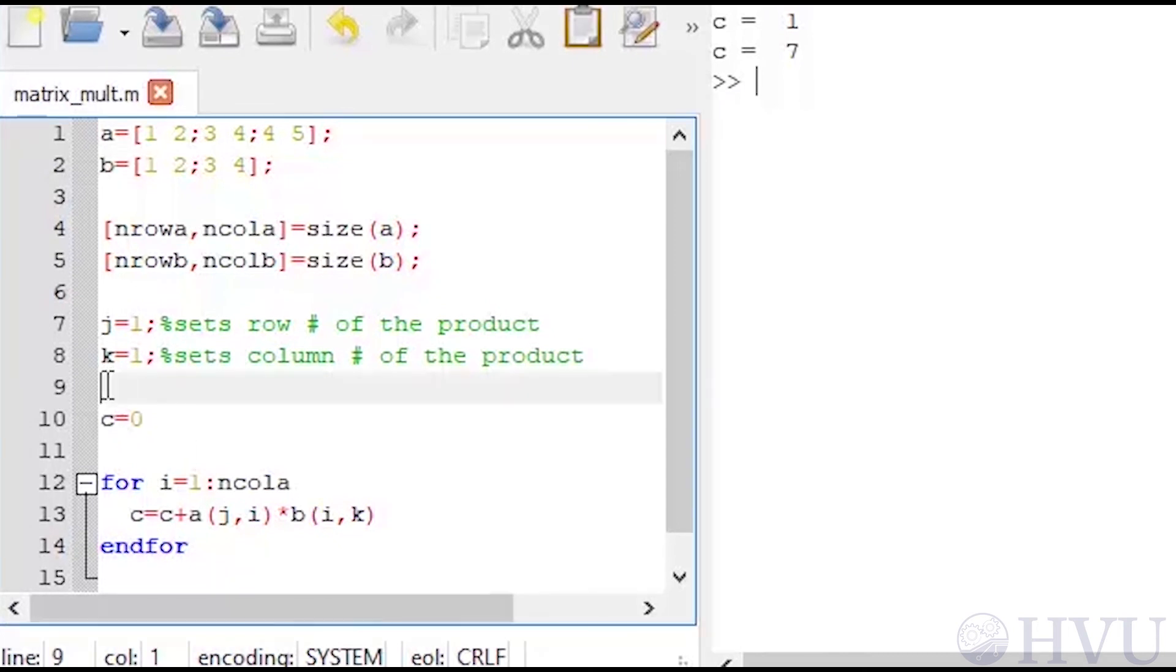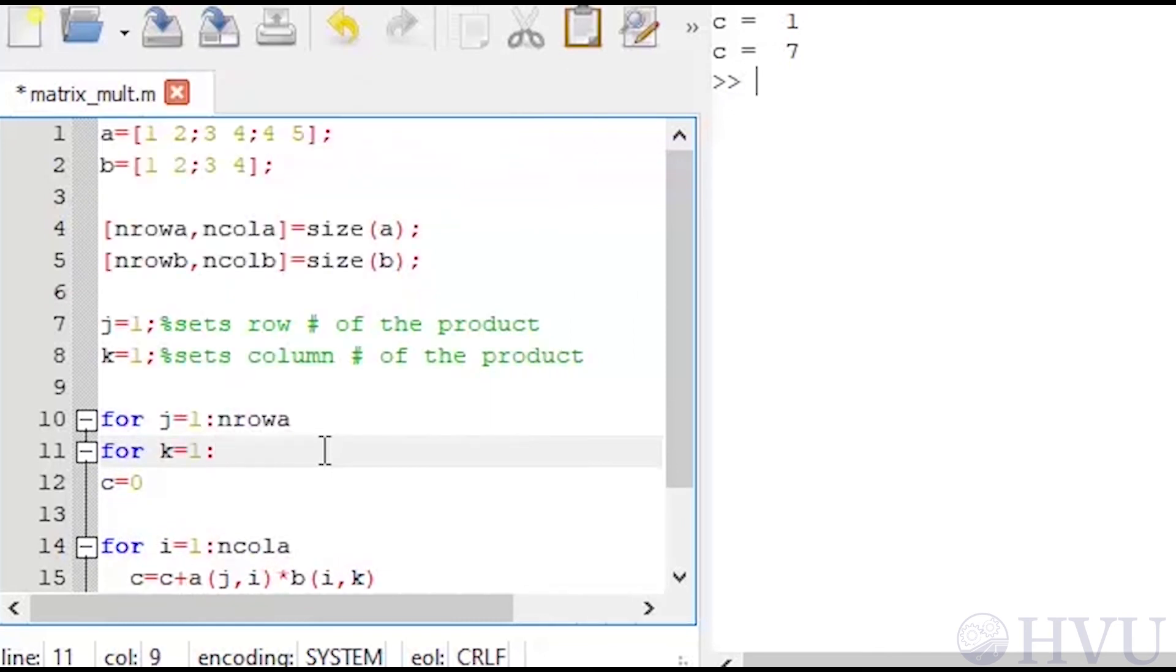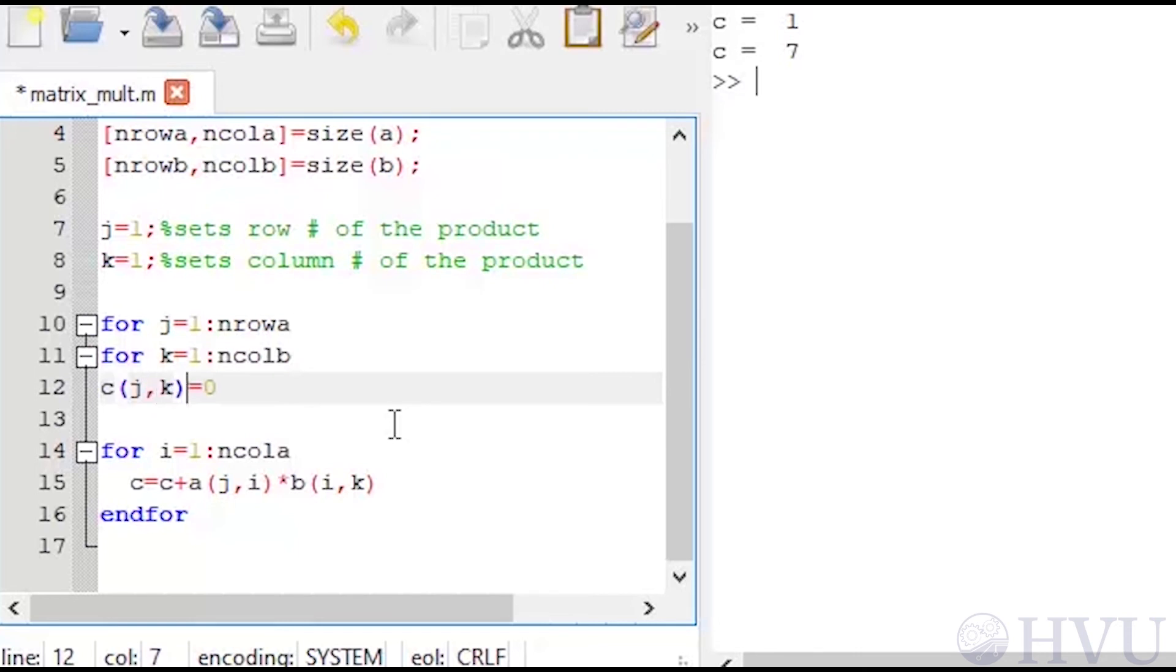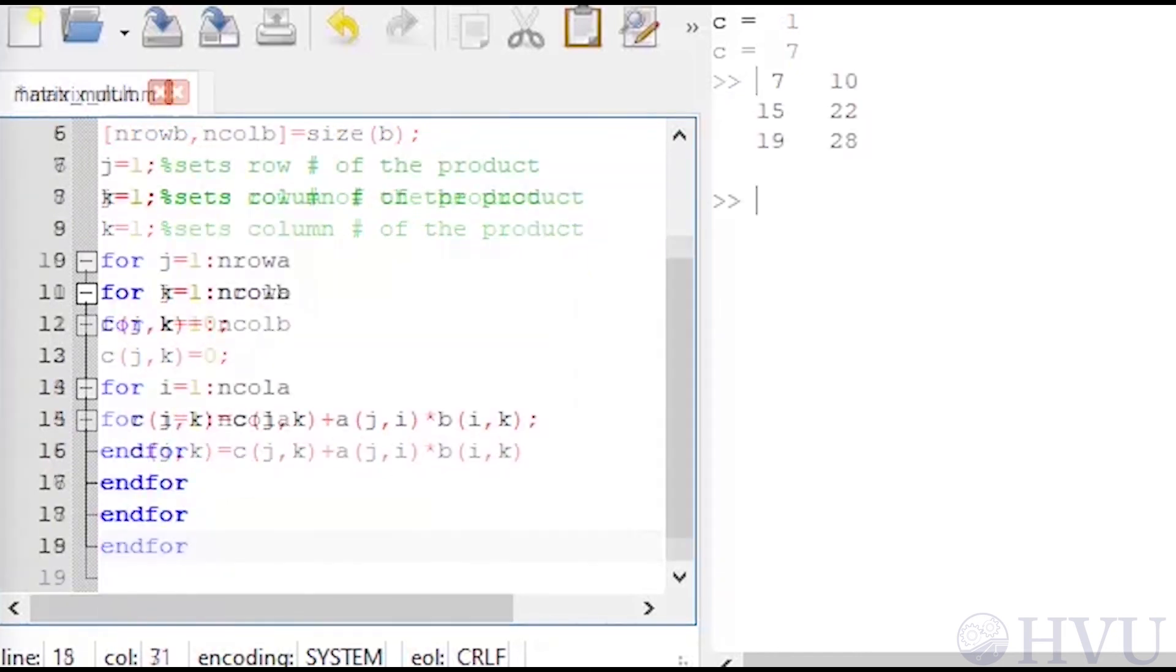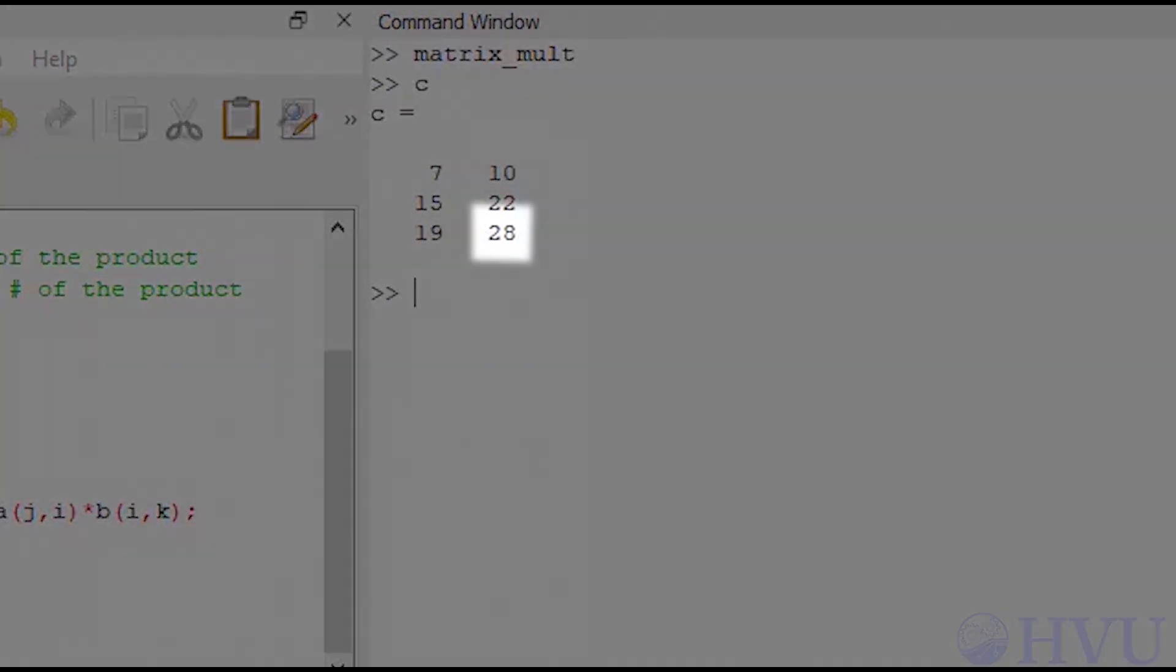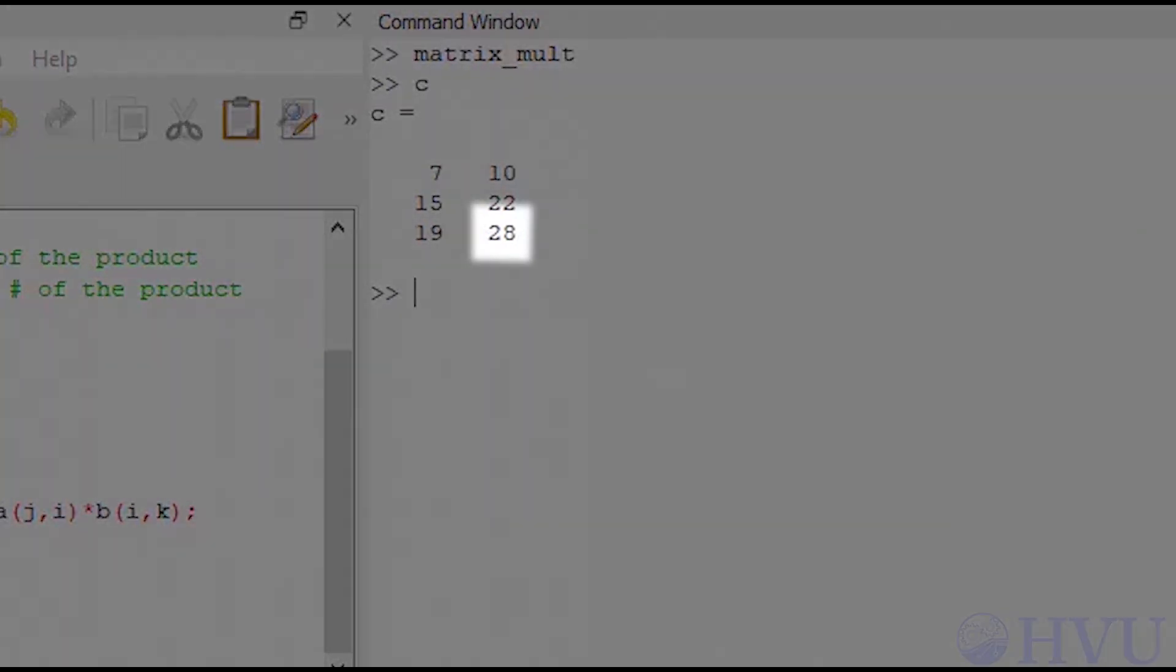now I can add my loops to go through all the rows of A and all the columns of B. I also need to make c a matrix, whose rows are j and columns are k. I'll also add semicolons to the calculations, since I don't really want to watch them scroll past. To test the file, I'll save it and run it. This element of c is 28, which is equal to 4 times 2 plus 5 times 4, so it looks like my program is working.